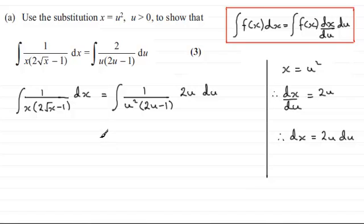Now we tidy this up. I can cancel that u with one of those there. We're left with the integral of 2 divided by u times 2u minus 1, integrated with respect to u. That's what we had to show.